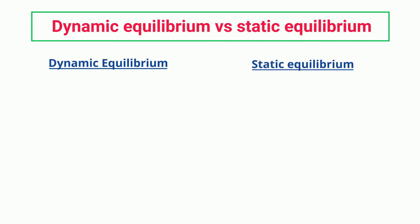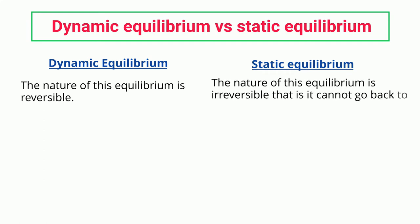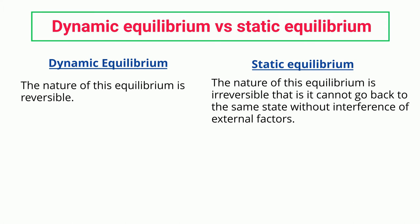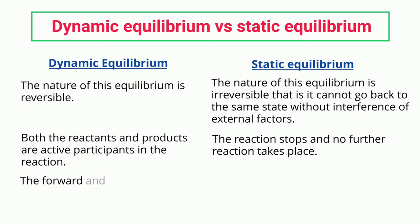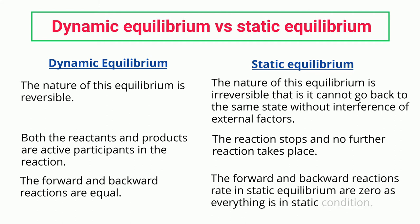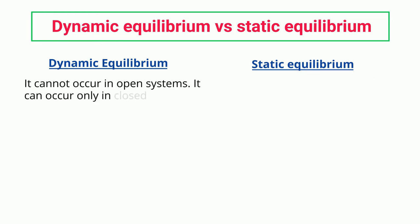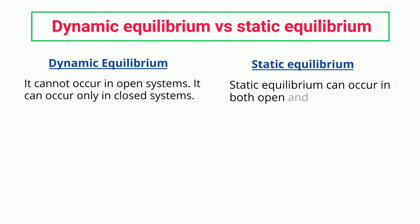Dynamic Equilibrium: The nature of this equilibrium is reversible. Both the reactants and products are active participants in the reaction. The forward and backward reactions are equal. It cannot occur in open systems — it can occur only in closed systems. Static Equilibrium: The nature is irreversible; it cannot go back to the same state without interference of external factors. The reaction stops and no further reaction takes place. The forward and backward reaction rates are 0, as everything is in static condition. Static equilibrium can occur in both open and closed systems.